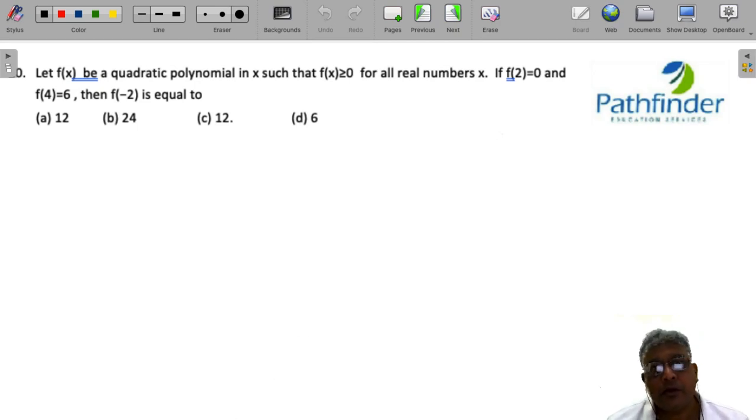Let 2022 slot to quantitative aptitude question number 20. Let f(x) be a quadratic polynomial in x such that f(x) is greater than or equal to 0 for all real numbers x.